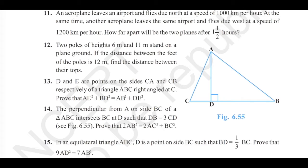Question number 11. An aeroplane leaves an airport and flies due north at a speed of 1000 km per hour. Notice here direction is involved, so let us be very clear about the directions.